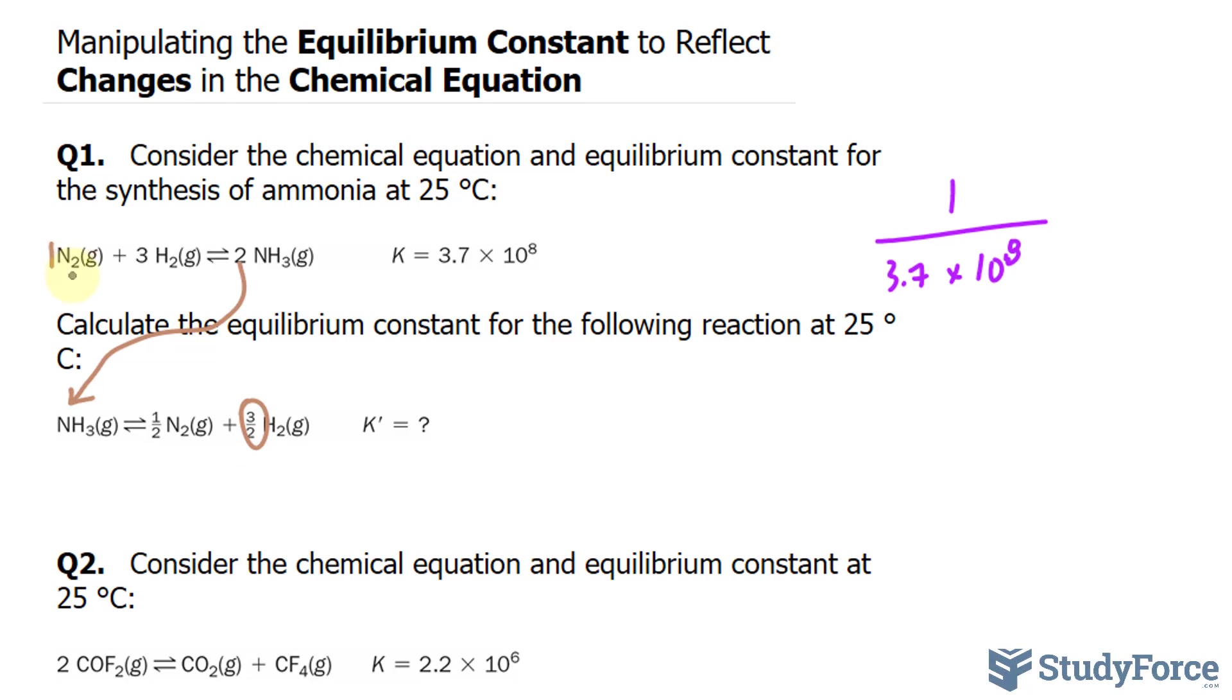Because we're dividing the original equation by half, the way that's reflected on K is you raise it to that factor. So in our case, it was half, so I'll raise it to a power of 1 over 2. What you see right here is K prime, which is the change in the equilibrium constant. Let's go ahead and calculate that.